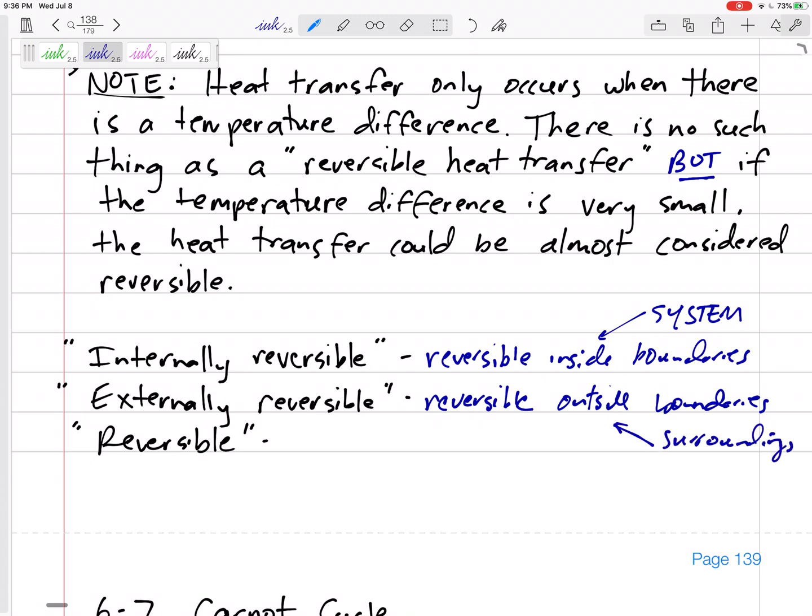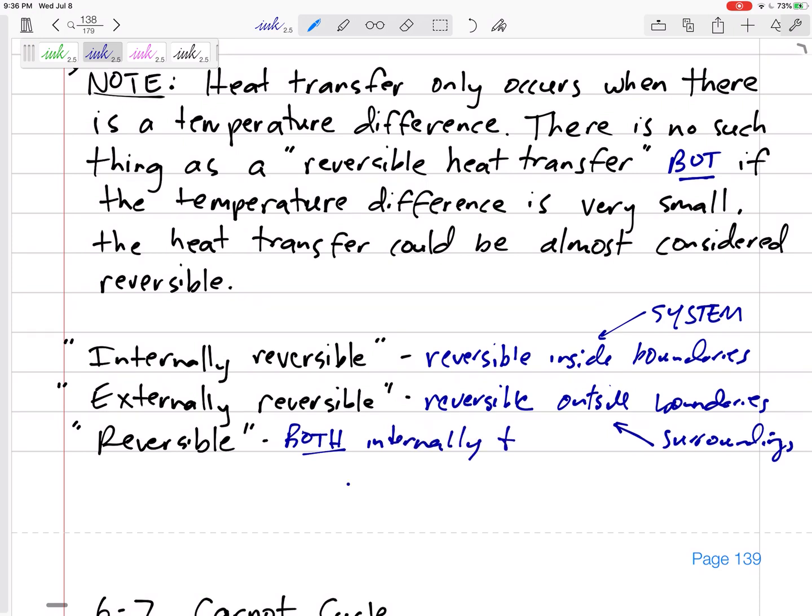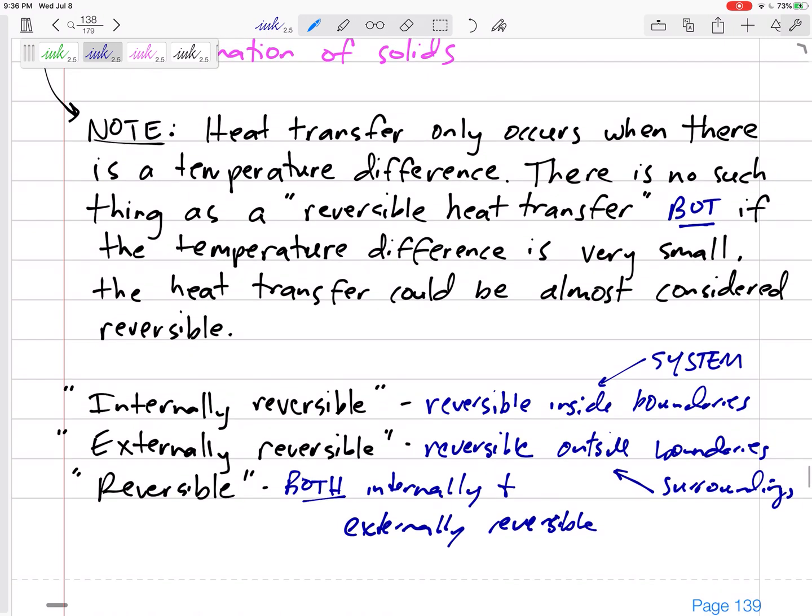But in order for something to be reversible, actually reversible, then both the system and the surroundings have to be reversible, both internally and externally reversible. Both internally and externally reversible would make it actually reversible.